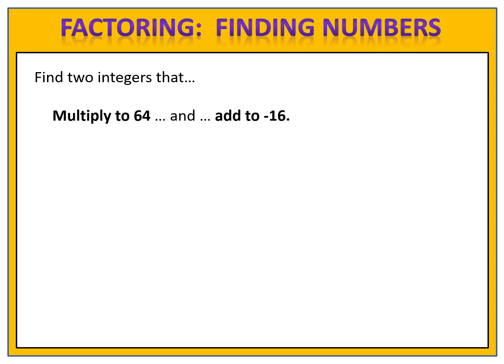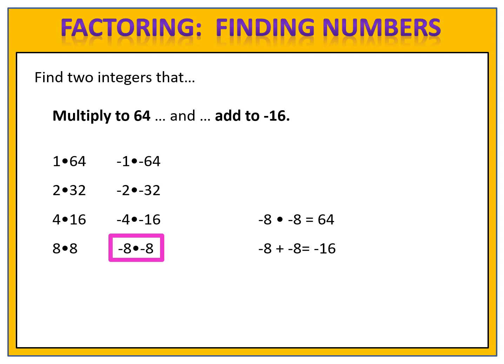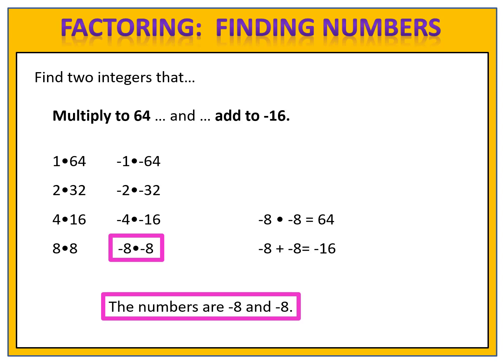Can you find two integers that multiply to 64 and add to negative 16? Pause the video — you can always use your graphing calculator. Possible candidates are 1 times 64, 2 times 32, 4 times 16, and 8 times 8, plus negatives: negative 1 times negative 64, negative 2 times negative 32, negative 4 times negative 16, and negative 8 times negative 8. We put 64 divided by x in the graphing calculator and scrolled the table. Which pair adds to negative 16? Negative 8 and negative 8. Verify: negative 8 times negative 8 is 64, and negative 8 plus negative 8 is negative 16. The numbers are negative 8 and negative 8.